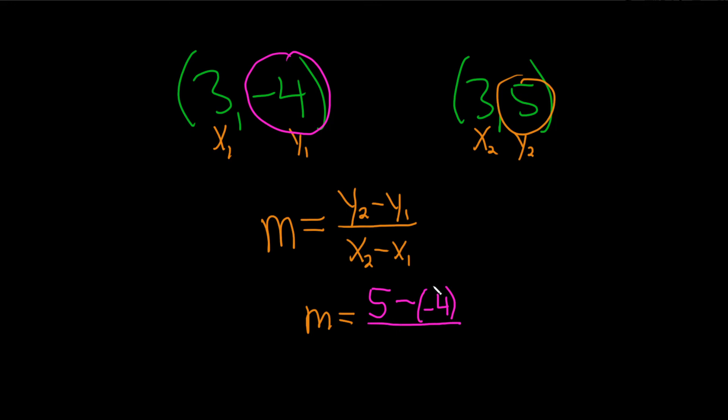Divided by, and then x2 is 3 minus, and then x1 is also 3. This is interesting.